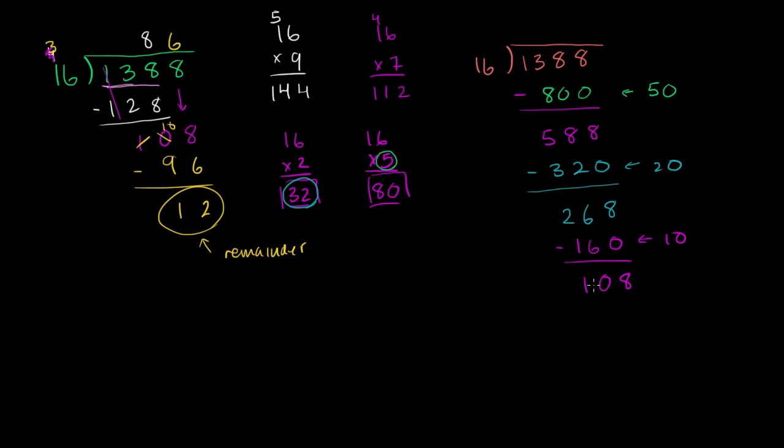And then we're left with, how many times does 16 go into 108? We know 16 times 5 is 80. So let's just try 5. 16 times 5 is 80. We subtract right over here. 8 minus 0 is 8, 10 minus 8 is 2. So we're left with 28.